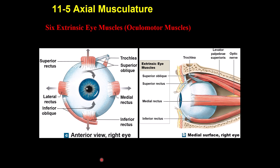These are the muscles of the eyes that are under your control. There are six of them — four are called rectus and two are called oblique. This one is called superior rectus, and this is the one responsible for moving the eye upward. The lateral rectus moves the eye away from the nose.